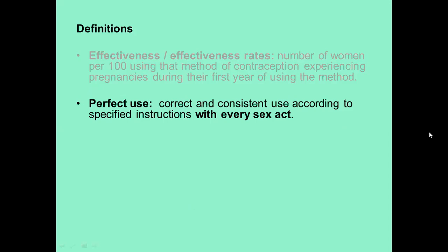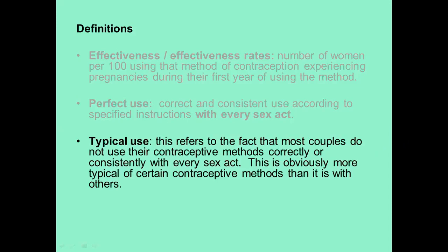Perfect use is correct and consistent use according to specified instructions with every sex act. Typical use refers to the fact that most couples do not use their contraceptive methods correctly — for example, when a couple doesn't use a condom correctly on New Year's Eve. That is not considered perfect use. Typical use is obviously more relevant to certain contraceptive methods than others, because some are less easy to mess up.